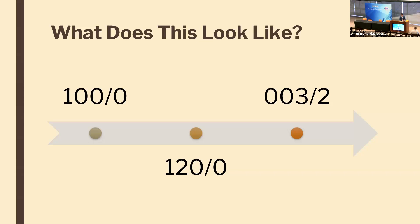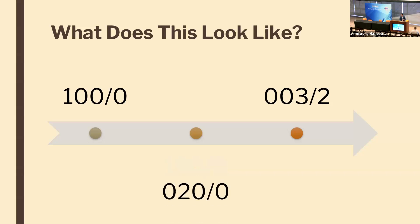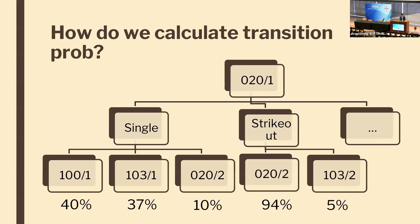State two has two runners on base and zero outs — two minus two is zero, so we know zero runs were scored. Now if state two says 0-2-0-0, we have only one runner on base and zero outs, so moving from state one to that state two, one run was scored.